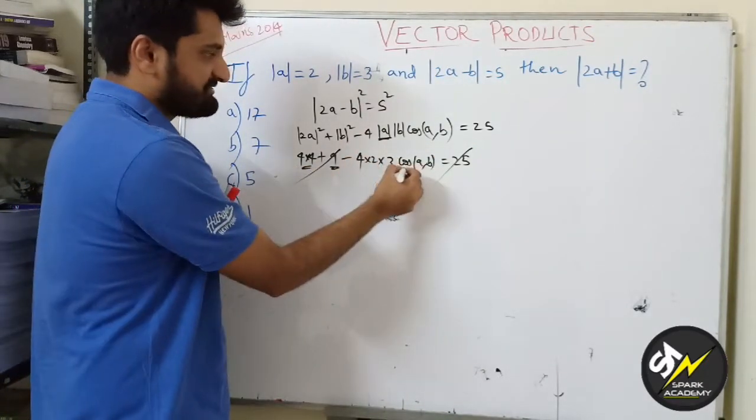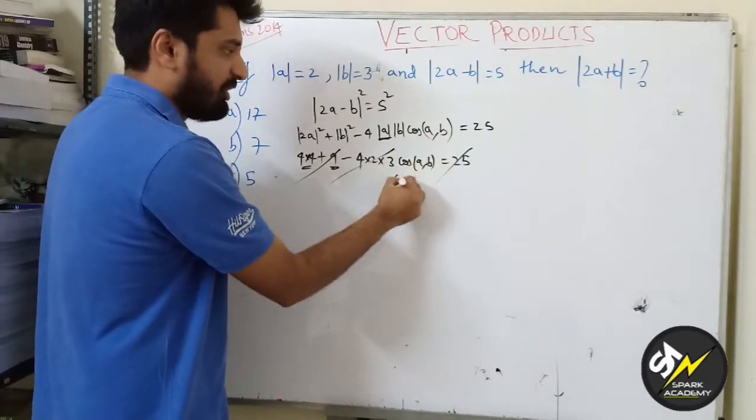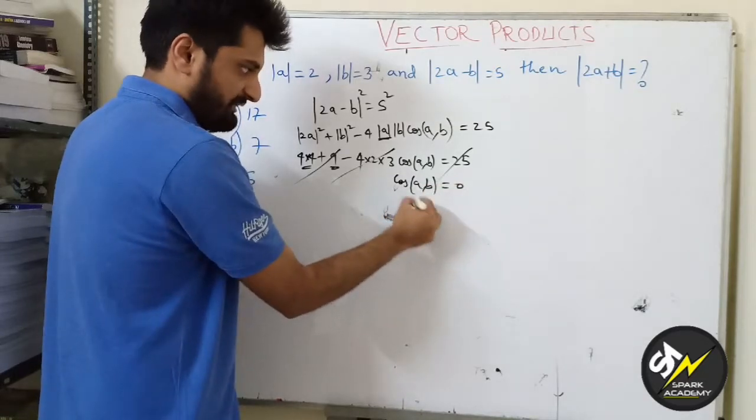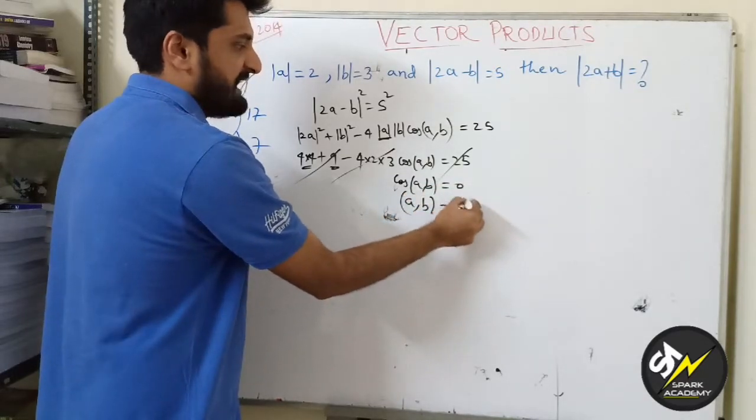Now what is this? So this is 0. Since this is 0, now cos(a,b) is 0, or a,b is 90 degrees.